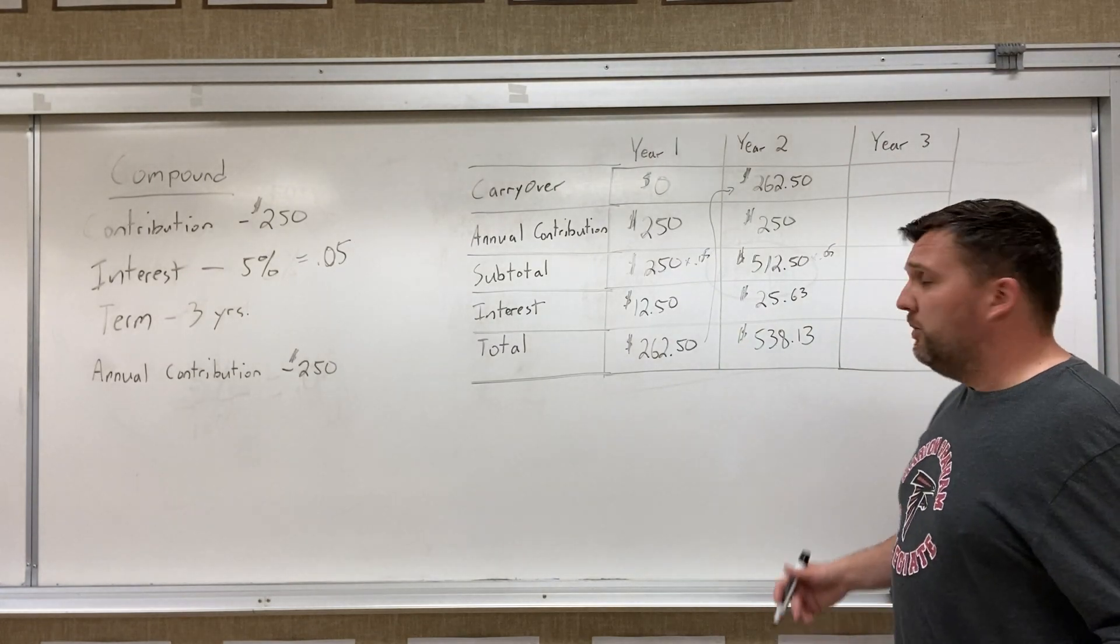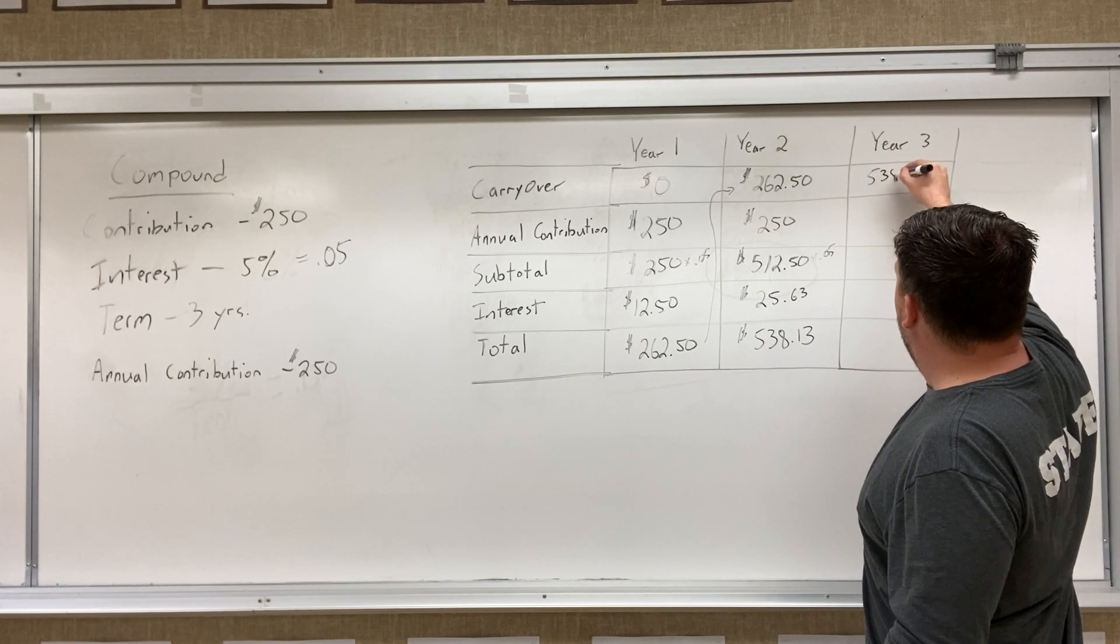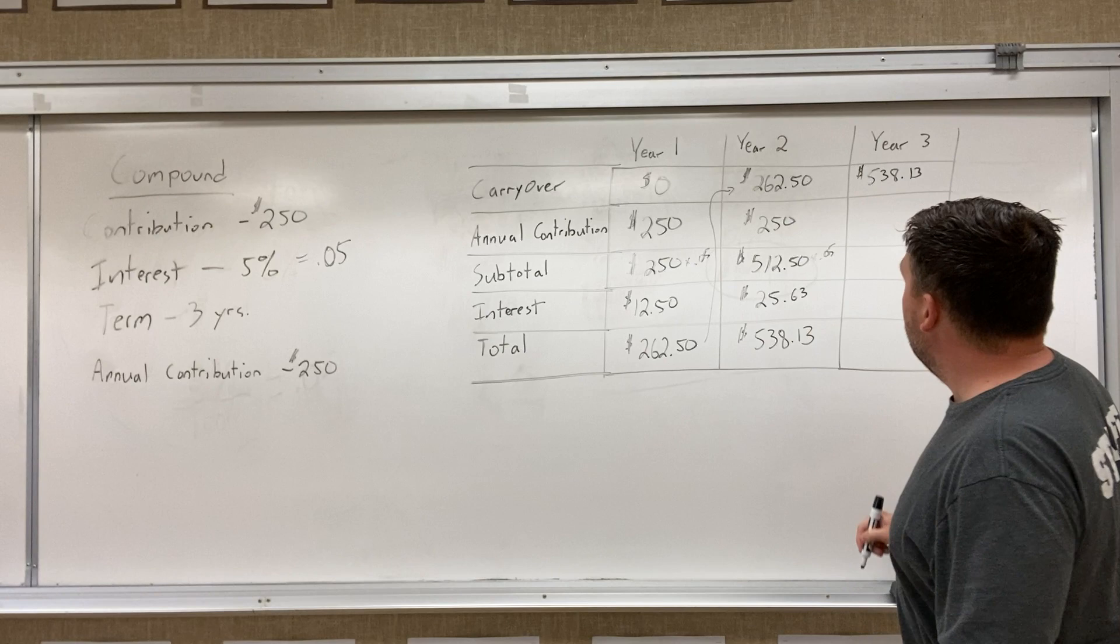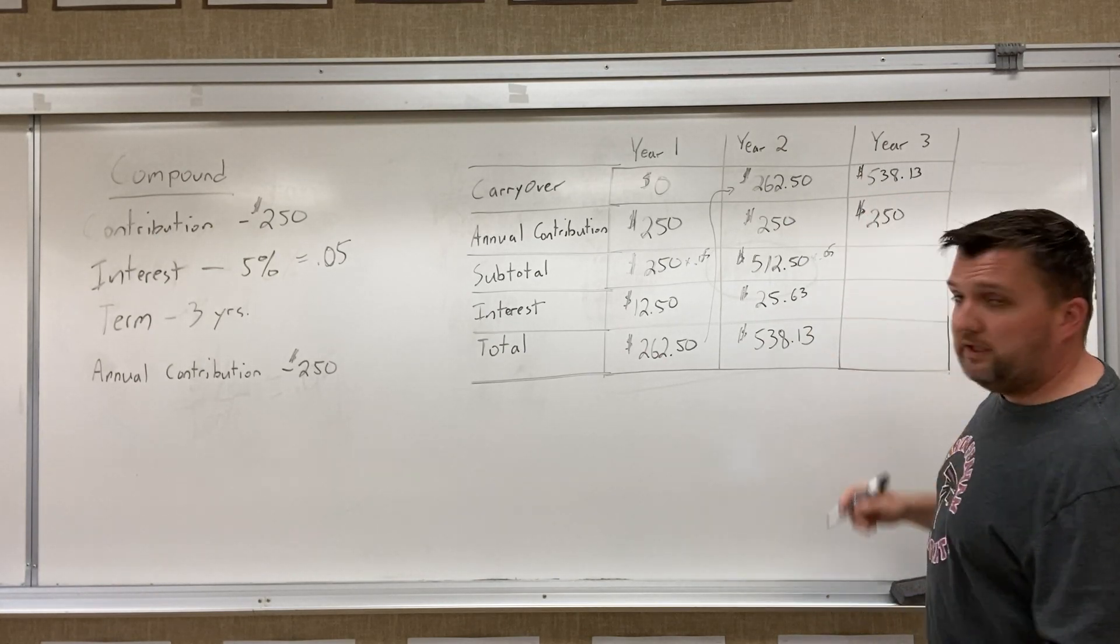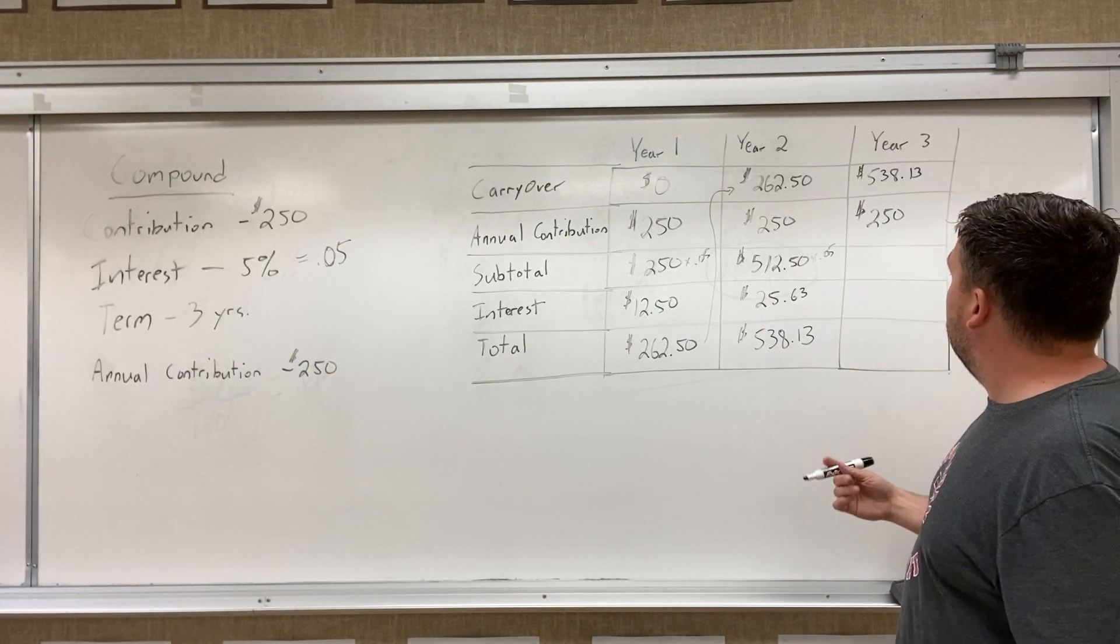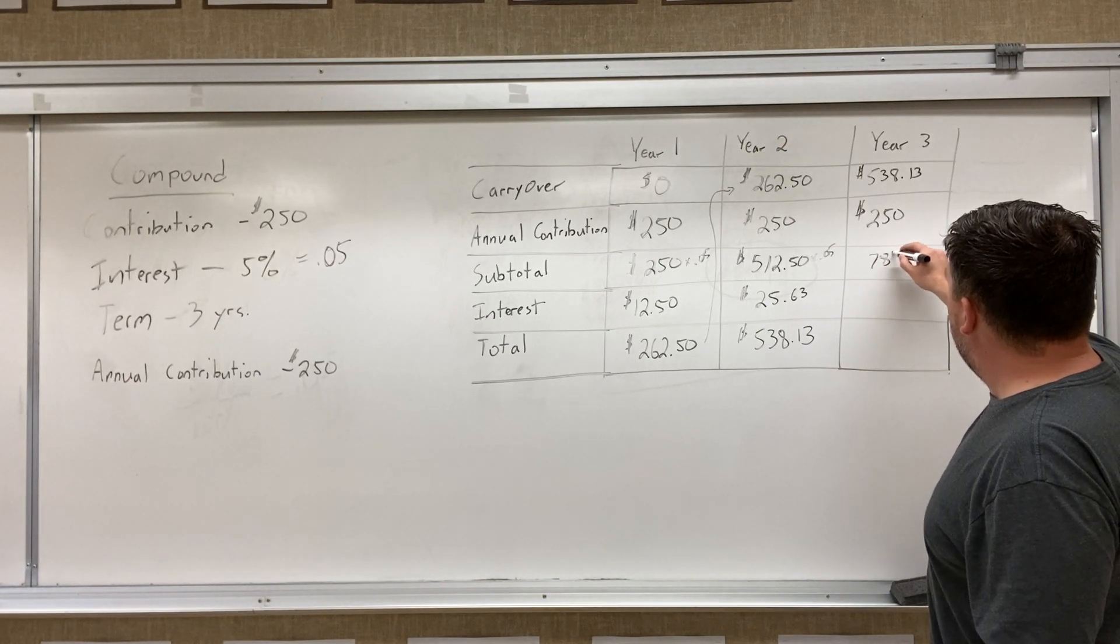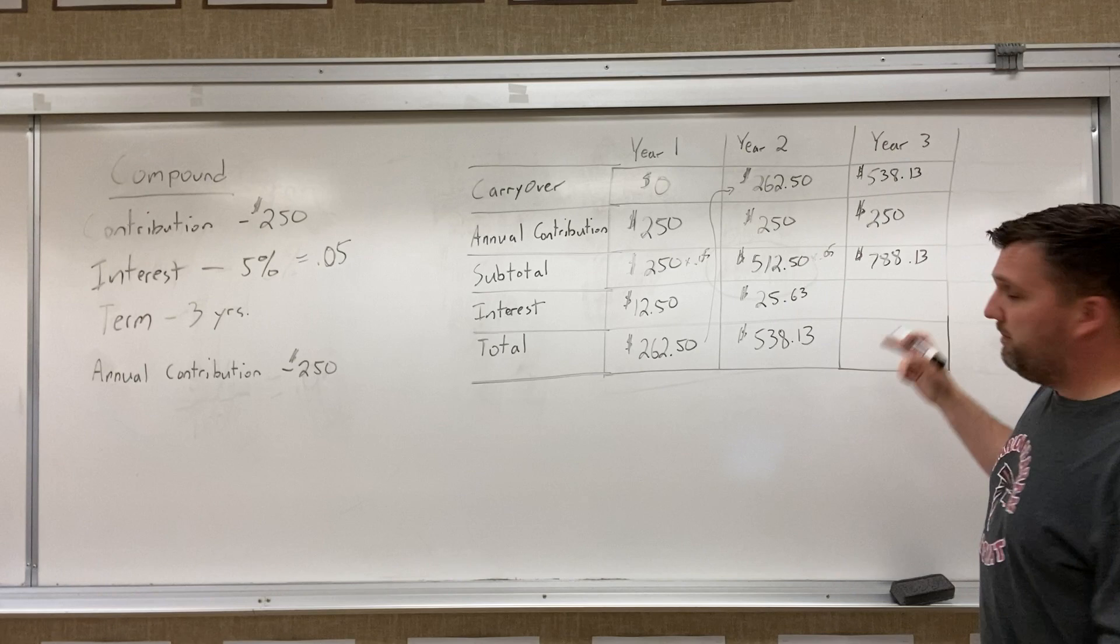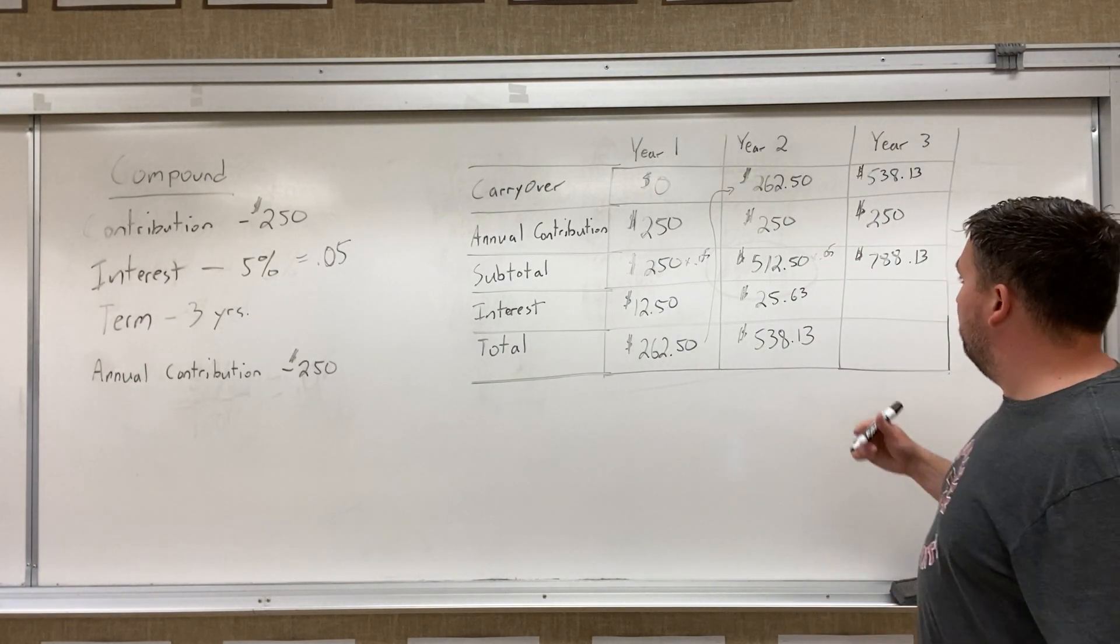So same thing, we're gonna carry that number over to the top for the start of the next year, so $538.13. We're gonna add our contribution of $250, again, like we did in the year before. And when we add those two numbers together, we are going to have $788.13 sitting in the bank account before we apply our interest to it.